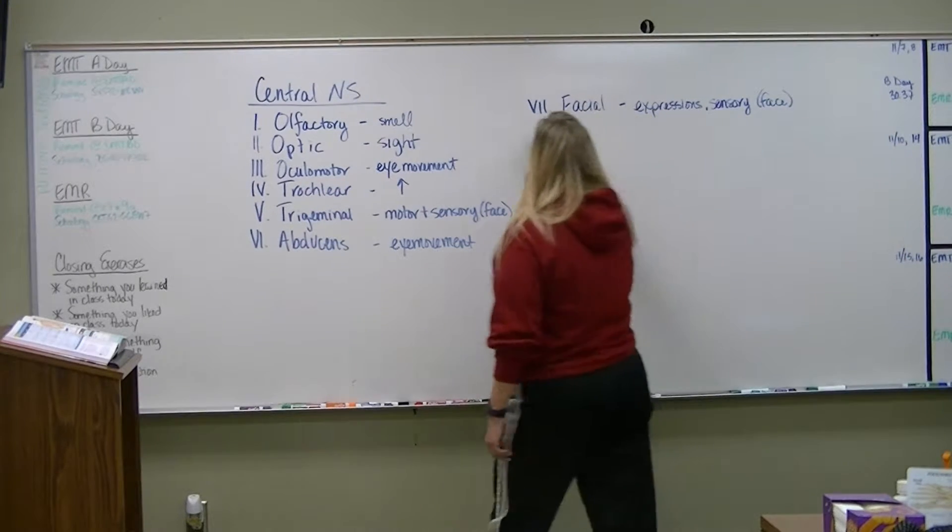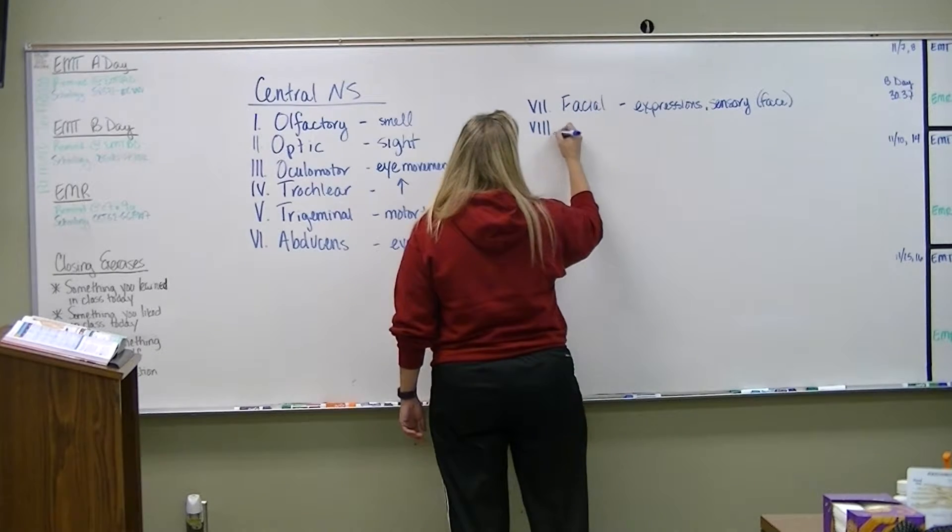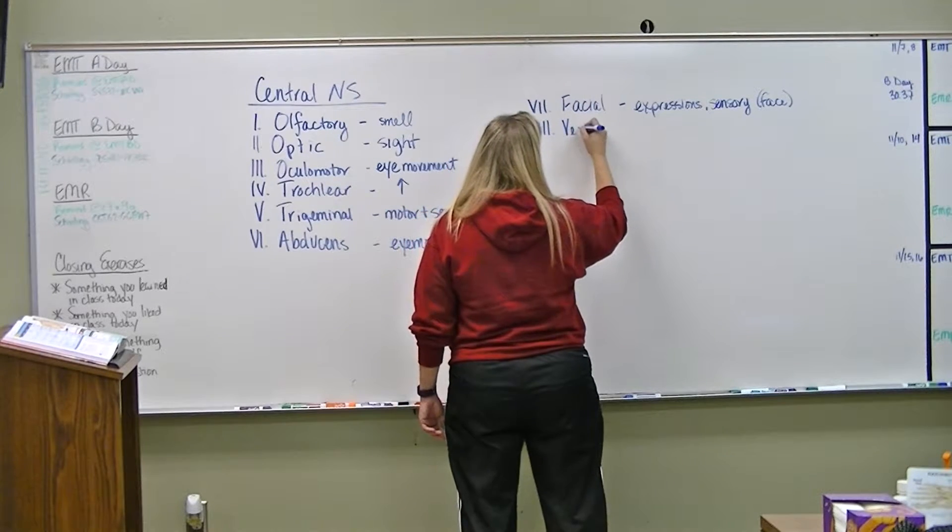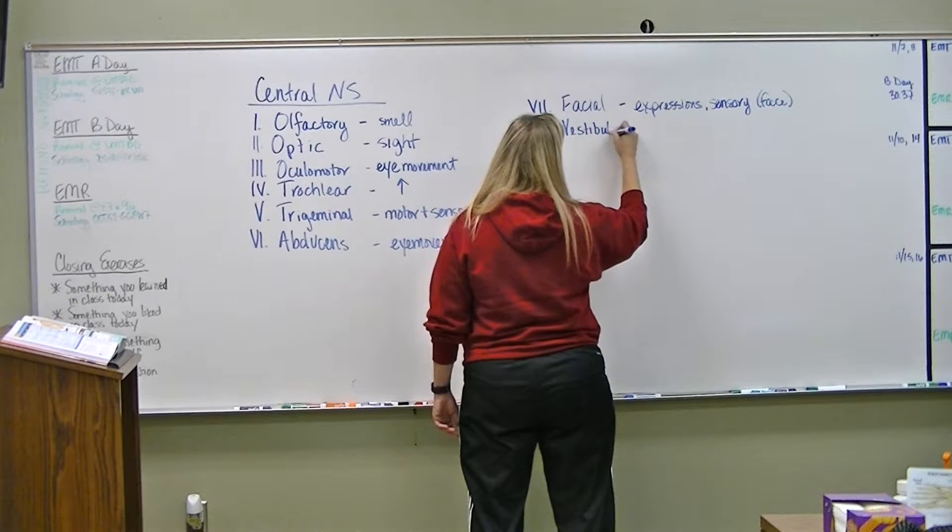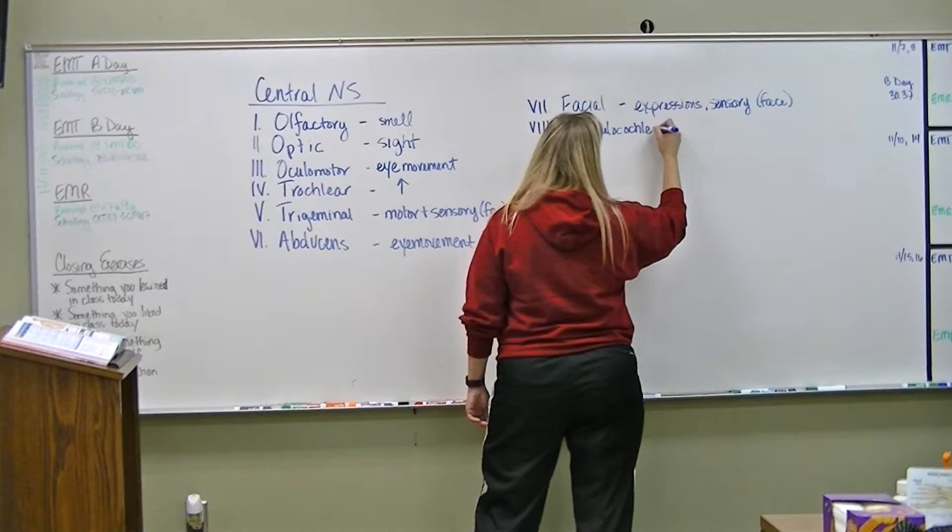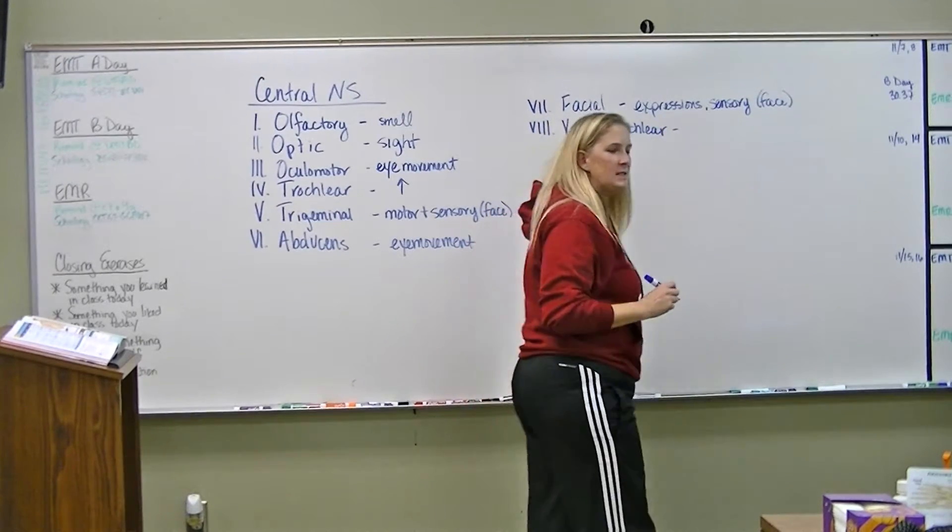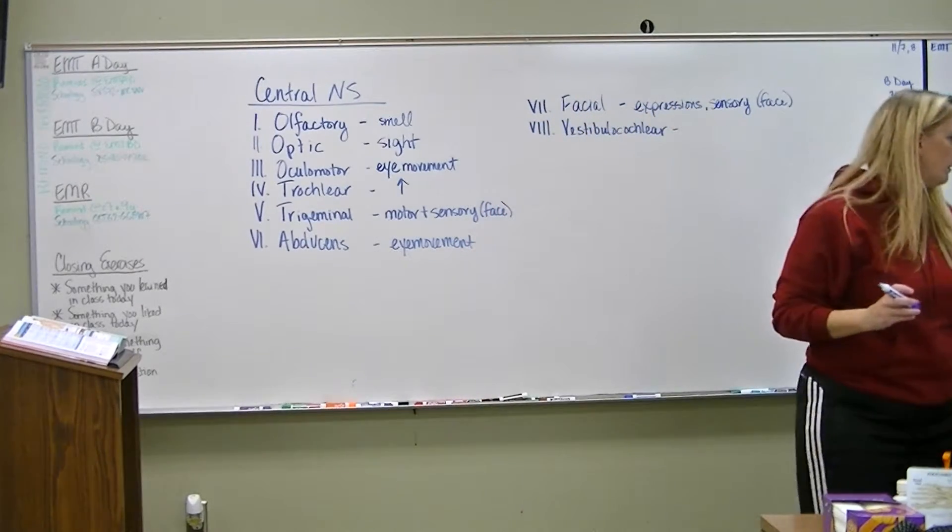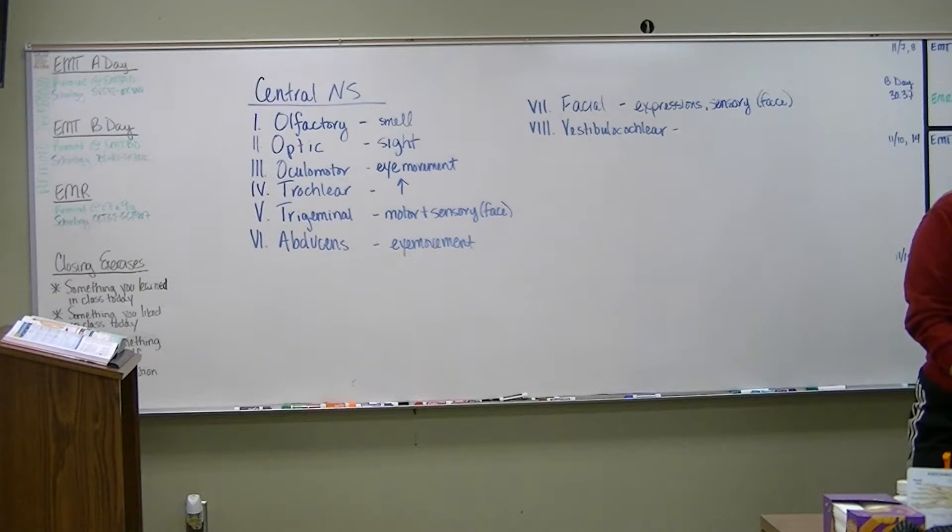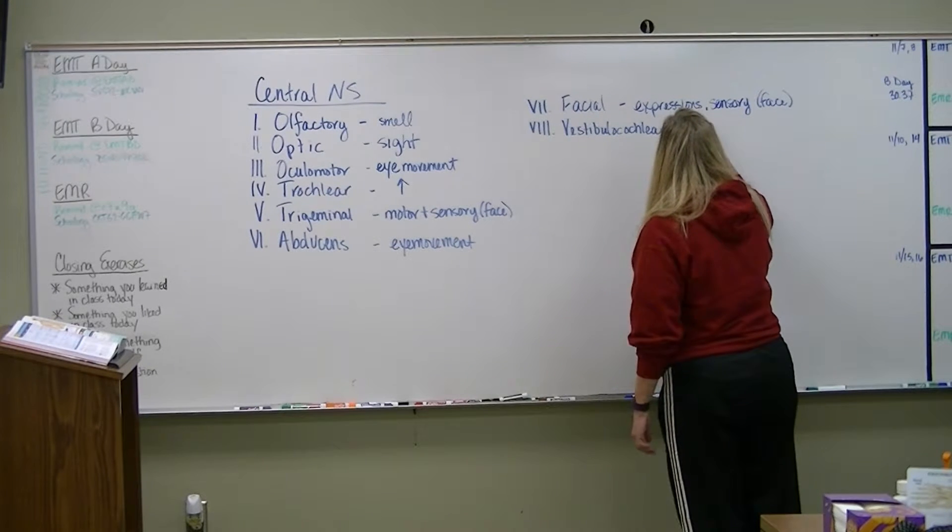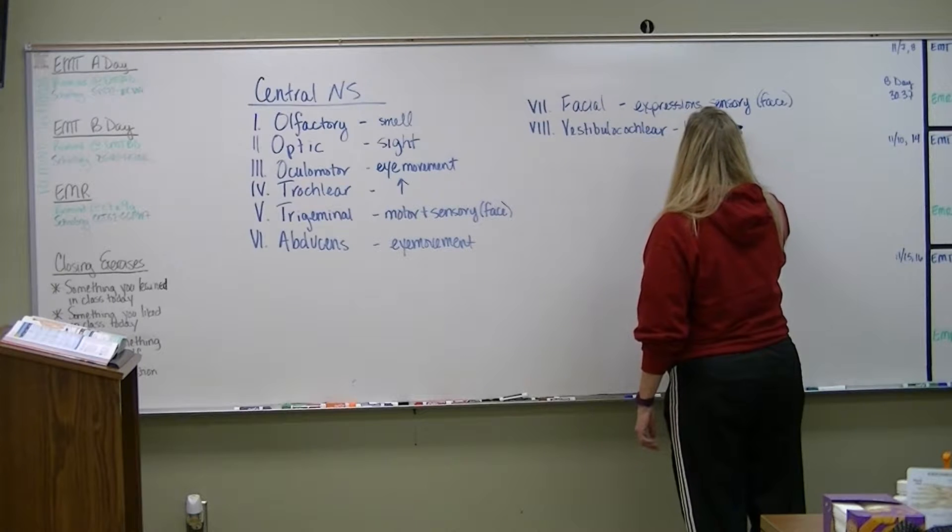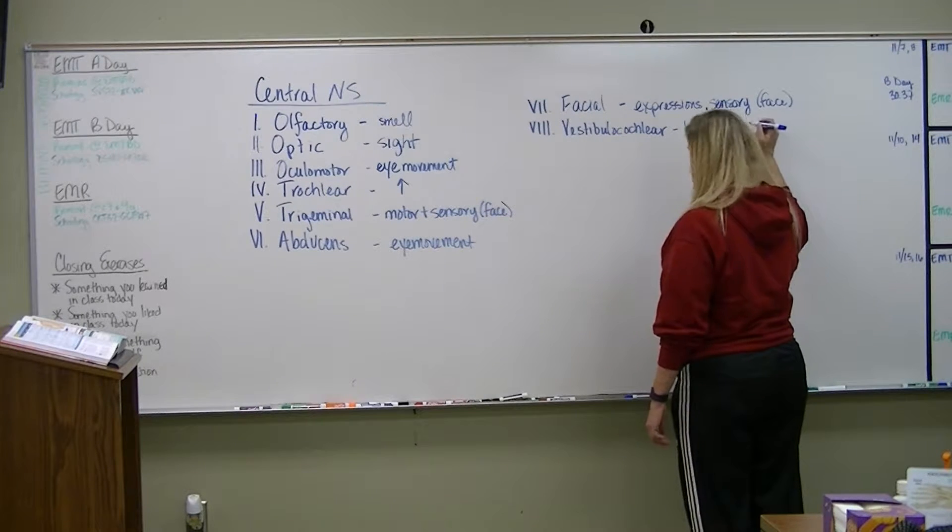Okay, number eight. This is quite a mouthful. This is your vestibulocochlear. What do you suppose this one is responsible for? Hearing. Yeah, it is. It's responsible for hearing and balance. What gave it away, Cory? Cochlear. Yep.